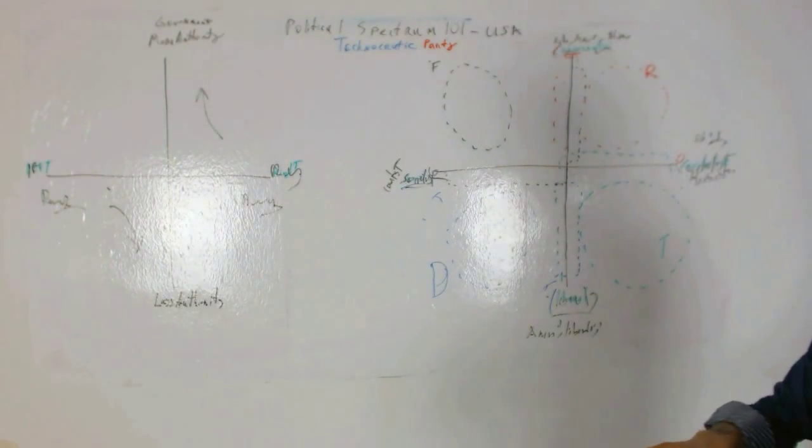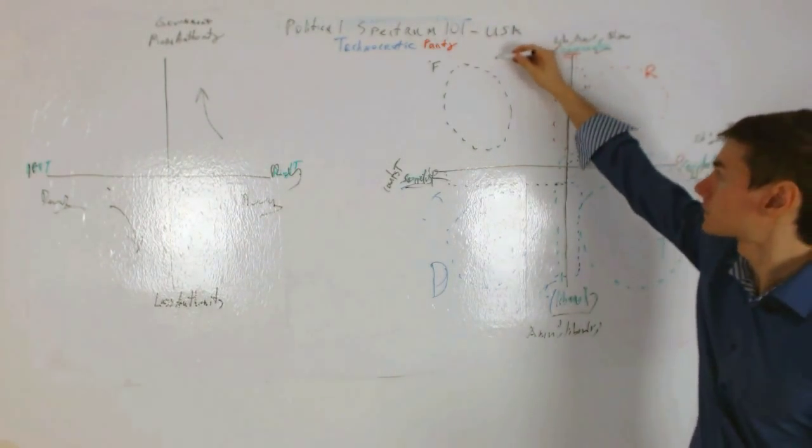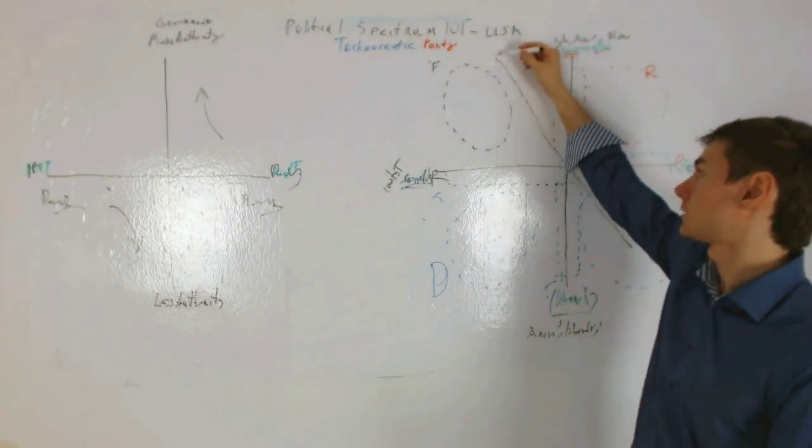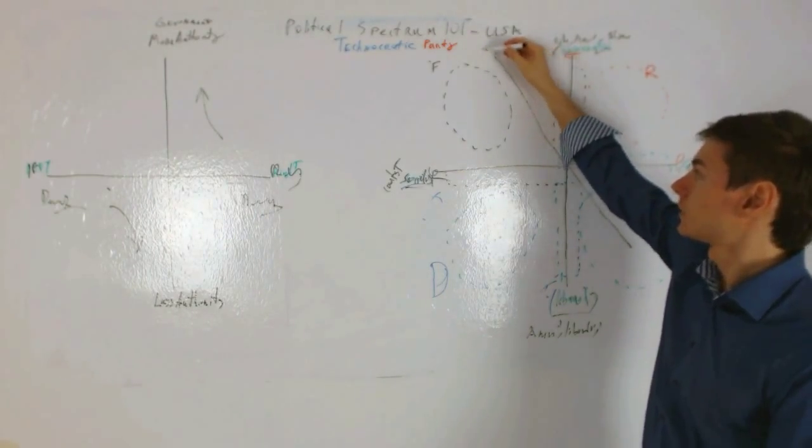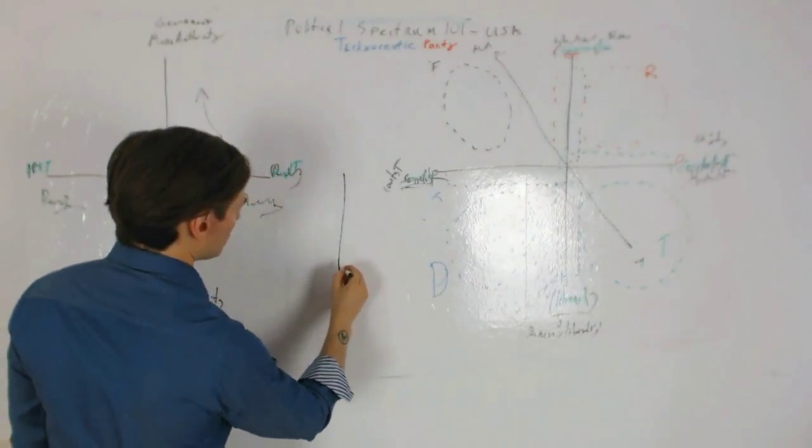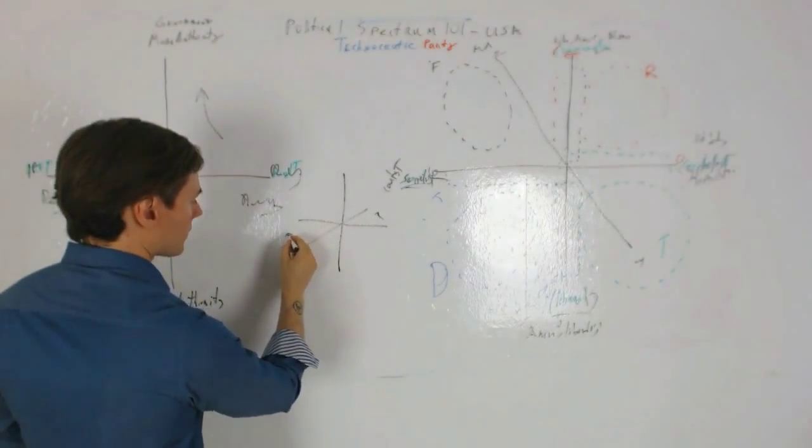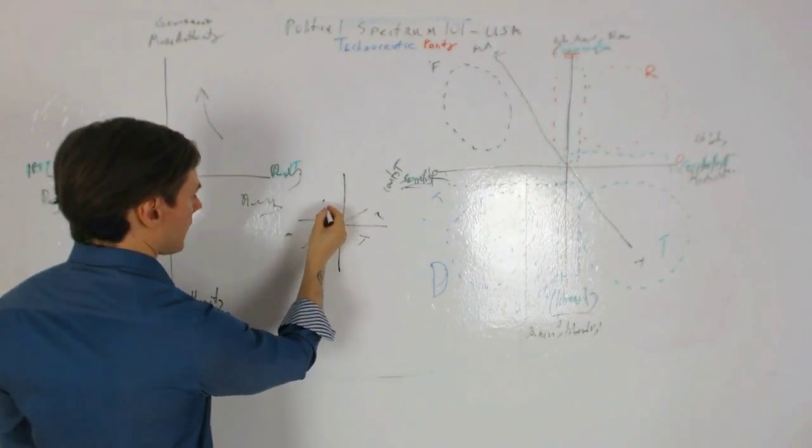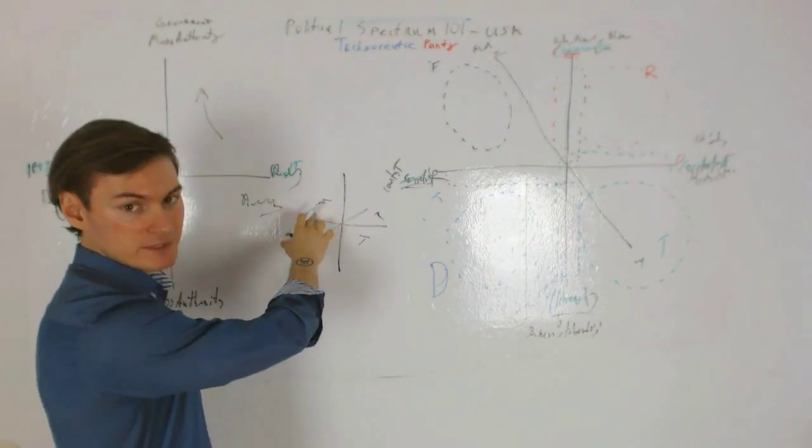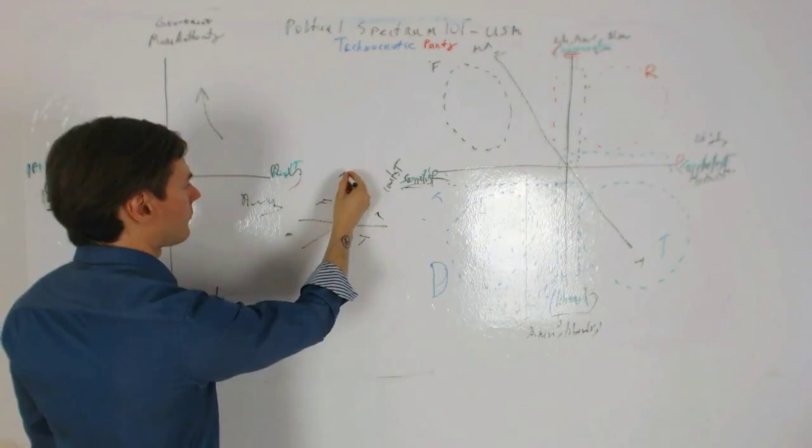And I hope you understand where we fit and why the left and right doesn't quite work because this isn't left, this isn't right, this is much more complicated. And we can go even deeper and try to explain that in fact if you can imagine it's three-dimensional and now you have like a z coordinate, more authority and less authority.